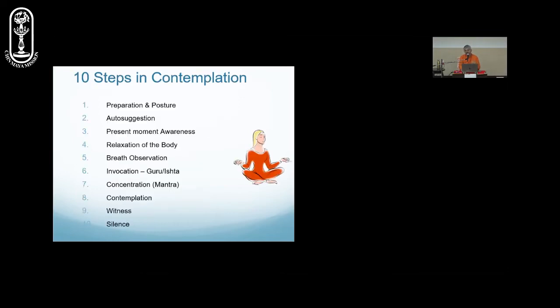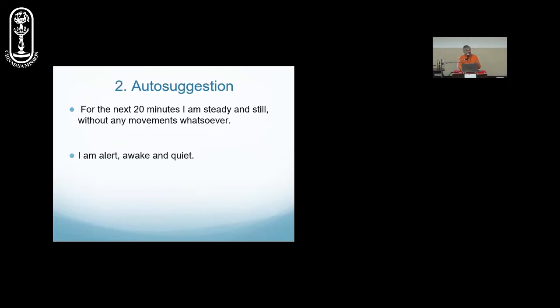So three auto suggestions we have to give. Auto suggestion means we are instructing our own mind, something which will help the mind to decondition its old conditioning. Our first auto suggestion is for the next 20 minutes or whatever time we are going to sit for contemplation. For that much time, I am steady and still without any movements. Body we may make still and we sit down, but the mind is restless. And so the body also starts making movements.